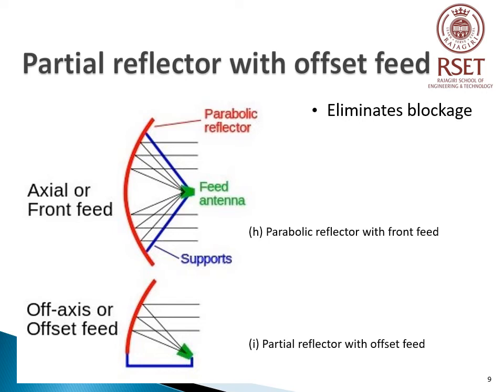This slide explains the partial reflector with offset feed. The figure shows a normal parabolic reflector which is front-fed, and a partial reflector with offset feed. In the partial reflector, we do not have a full parabola; we have a partial reflector and the source or feed is placed off the axis. The rays from the source fall on the partial reflector, get reflected, and are converted to parallel rays. Thus, the disadvantage due to feed antenna blockage can be avoided by the use of this offset feed mechanism.